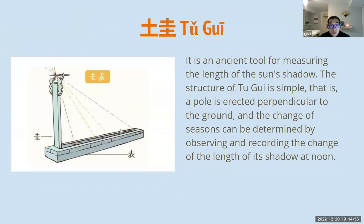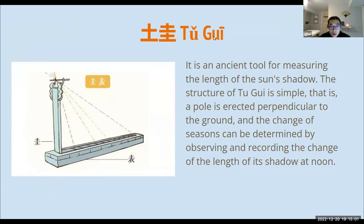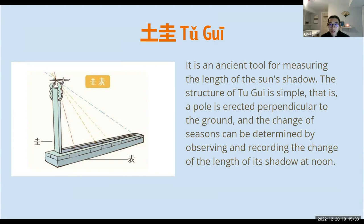The Tu Gui is an ancient Chinese tool for measuring the length of the sun's shadow. In the image, the blue line represents the winter solstice and the red line represents the summer solstice. It is very simple: there is a pole erected perpendicular to the ground, and the change of the seasons can be determined by observing and recording the change in the length of its shadow at noon.